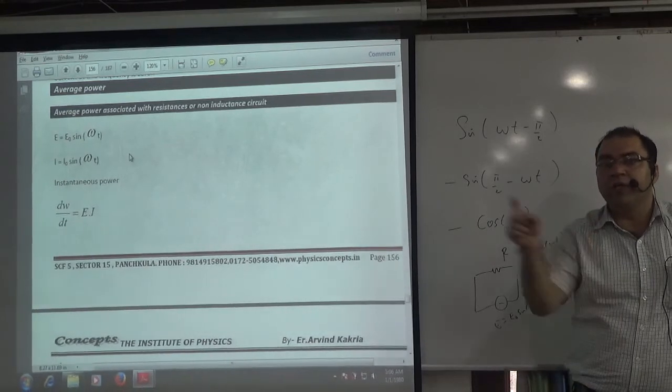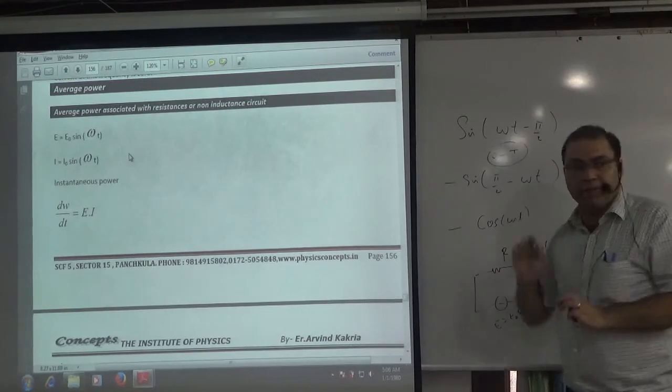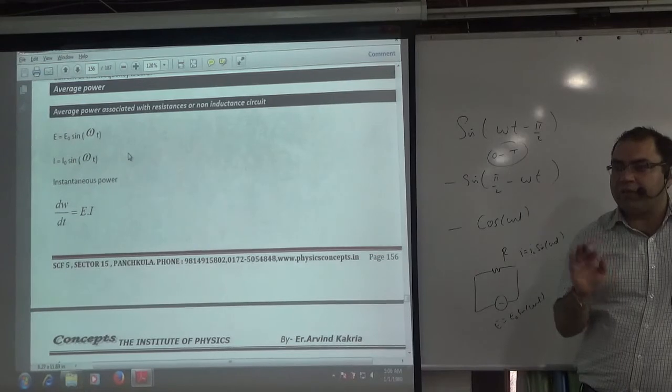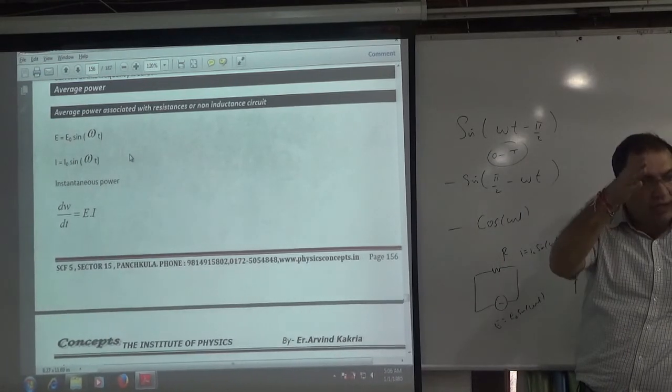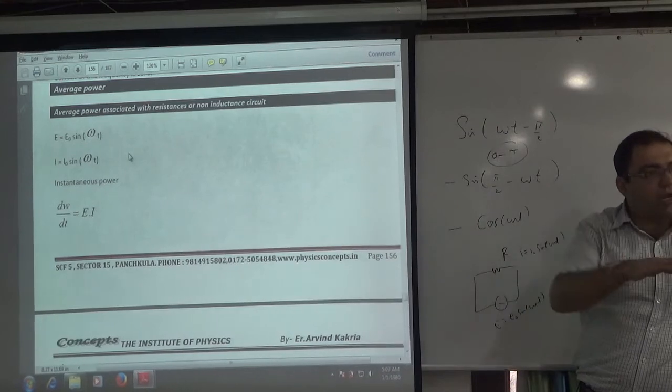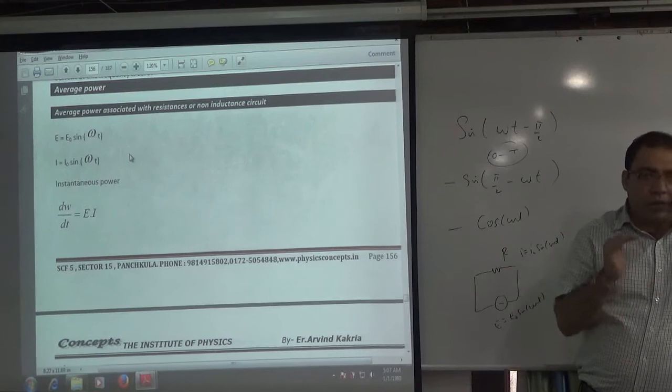No one has asked this. For zero to T, which means complete cycle, tell me how much average power is. You have to calculate average power. Like we have released the current in complete cycle. What will be the value of average power? What will be the value of zero to capital time? What will happen in zero? And what will I do now?